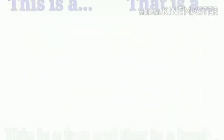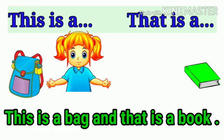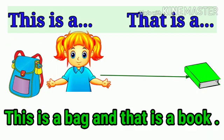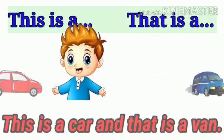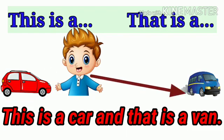Now we will learn some more examples from our textbook. First example: this is a bag and that is a book. Next: this is a car and that is a van.